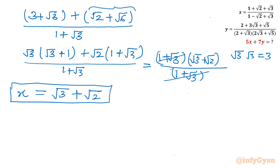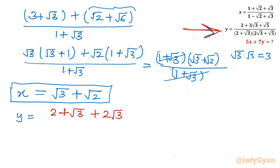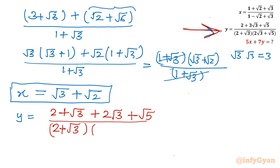Now let us consider y. So y = (2 + 3√3 + √5) / ((2 + √3)(2√3 + √5)). I split 3√3 in the numerator as √3 + 2√3, so the numerator becomes (2 + √3) + (2√3 + √5), and the denominator remains (2 + √3)(2√3 + √5).